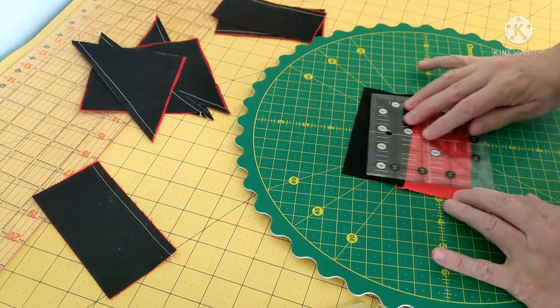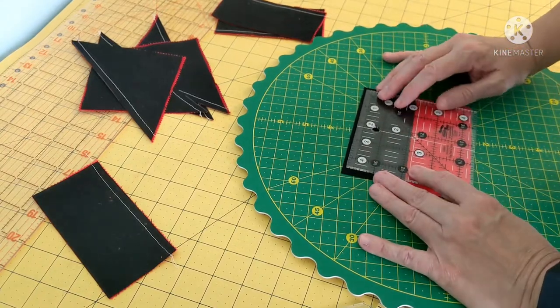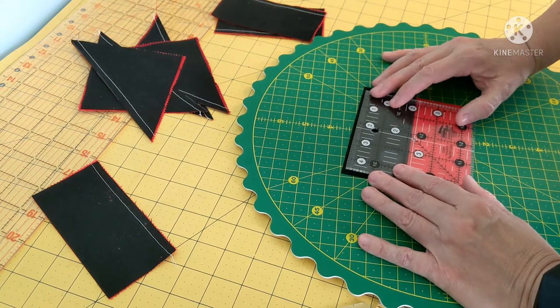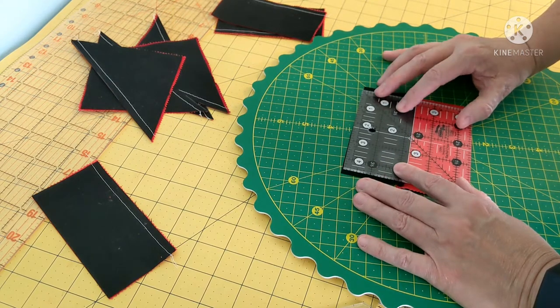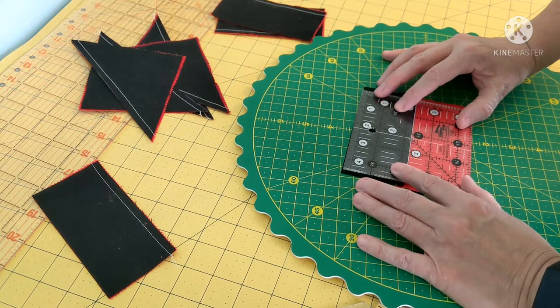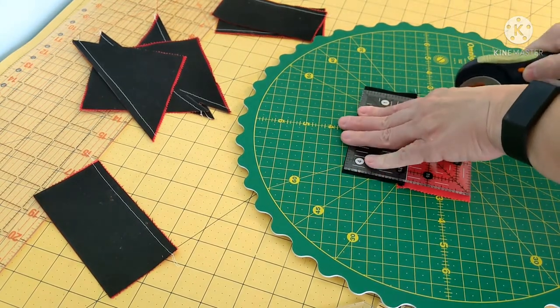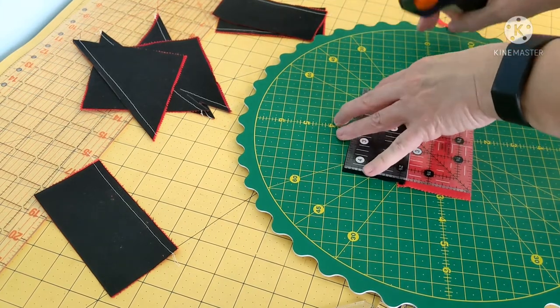So I'm just going to take my four and a half inch square. I'm going to find that middle mark, just trim off the extra on our sides.